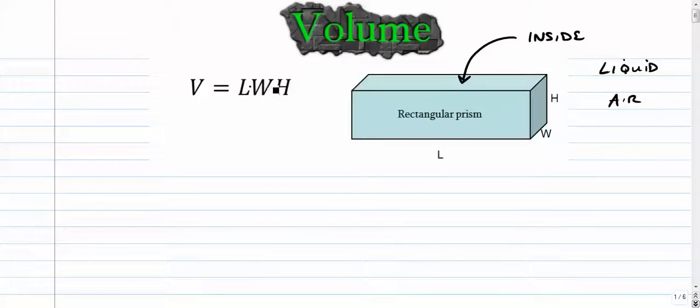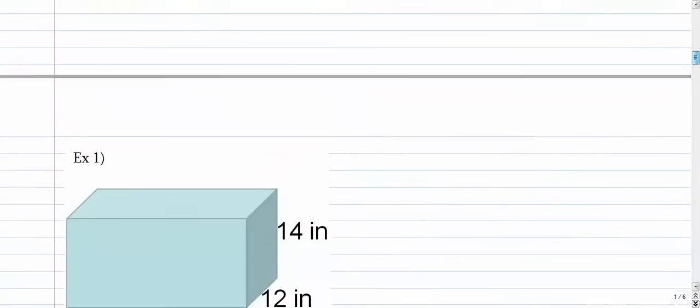Think about how much liquid something can hold, or how much air something can hold. It's a calculation of how much space is inside, and the calculation is super easy. It's length times width times height. All you want to do is multiply these three together. It makes no difference what sort of order you put things in since it's all commutative. Let's do a few examples here.